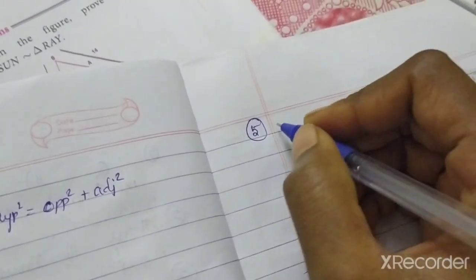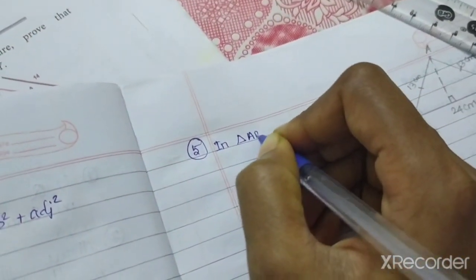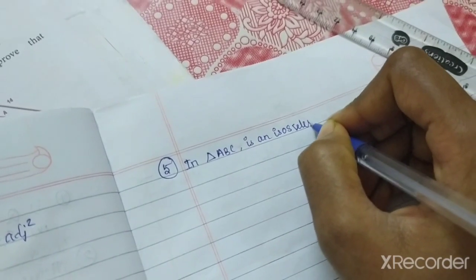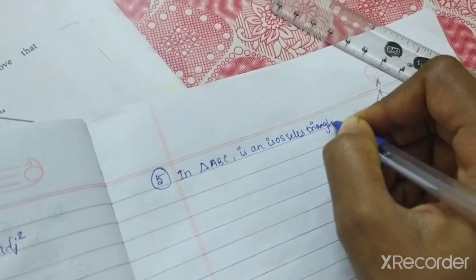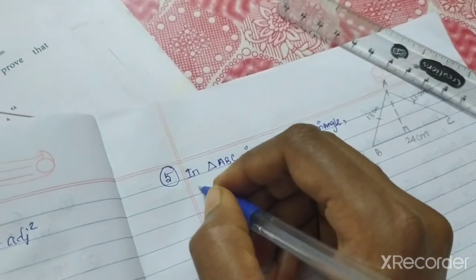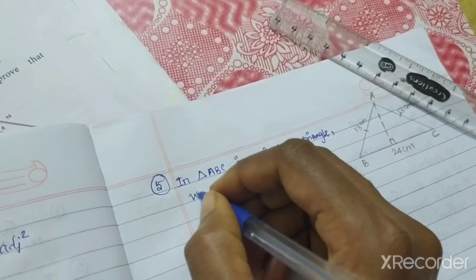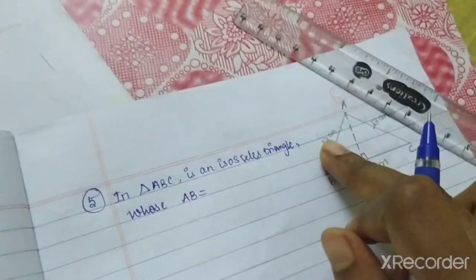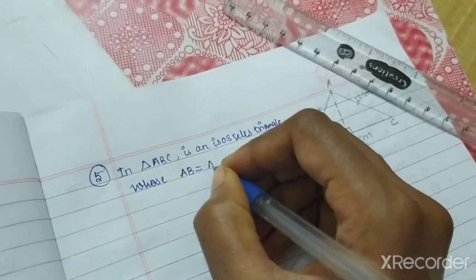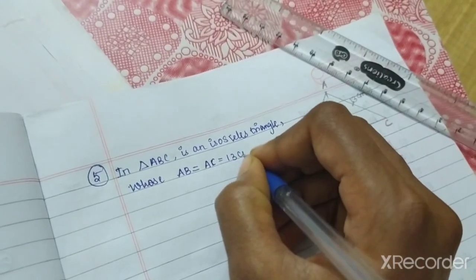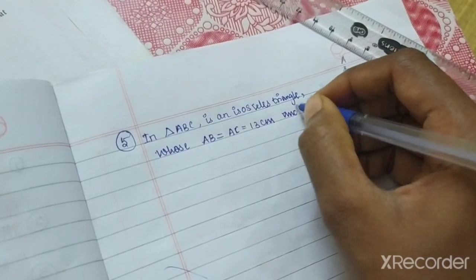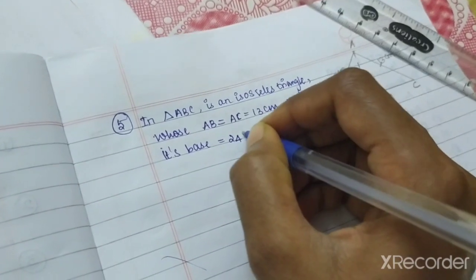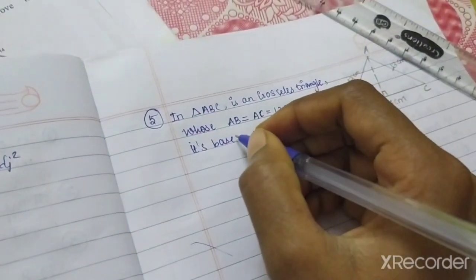In triangle ABC is an isosceles triangle. I am taking AB and AC, obviously sides are equal, so 13 cm. And its base equal to 24 cm, that's BC.